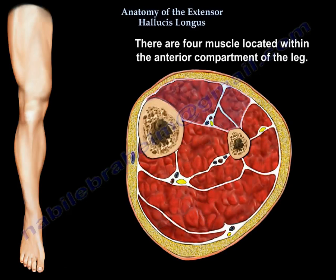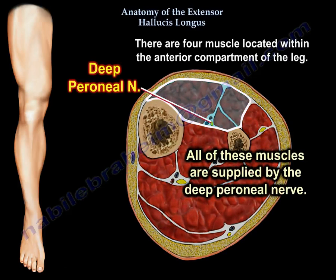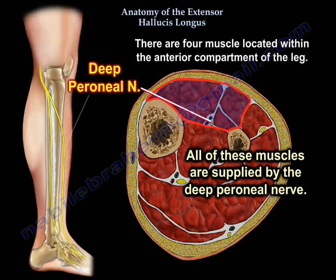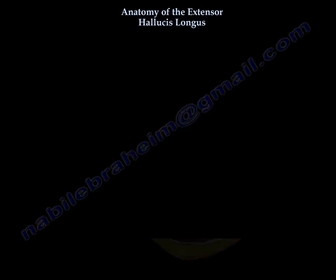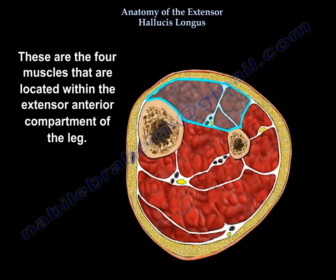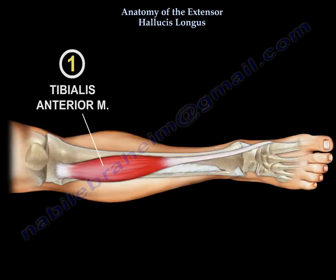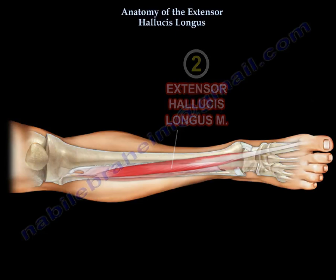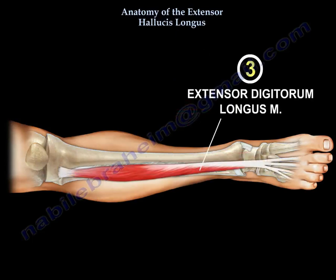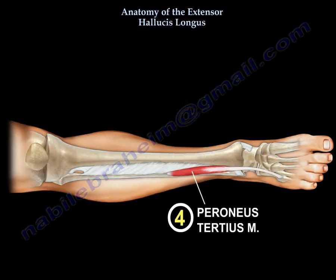There are four muscles in the anterior compartment of the leg. All these muscles are supplied by the deep peroneal nerve, which is the nerve present within this anterior compartment. The four muscles are: the tibialis anterior, the extensor hallucis longus, the extensor digitorum longus, and the peroneus tertius muscle.